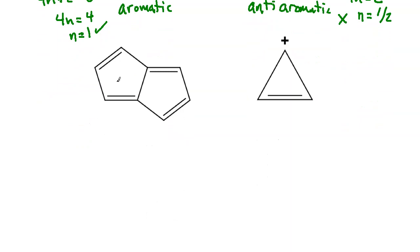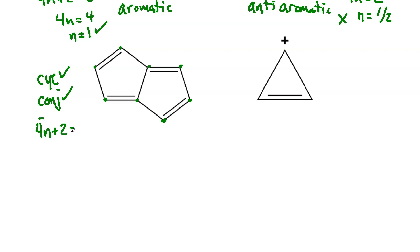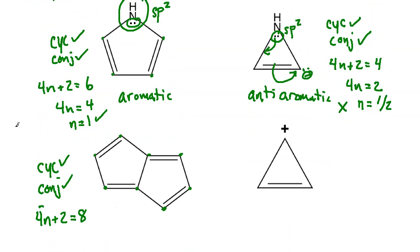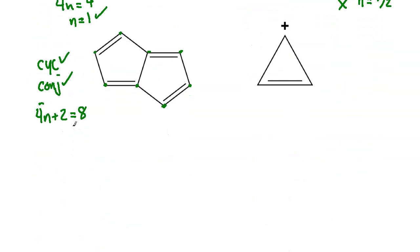For the next example: it is cyclic. Checking conjugation — double bond, double bond, double bond, double bond, double bond, double bond — yes, all points are conjugated with no sp3 carbons. Applying Hückel's rule: 4n + 2 = 8. Subtracting 2 gives 4n = 6, so n = 3/2 — not a whole integer. This compound is anti-aromatic.